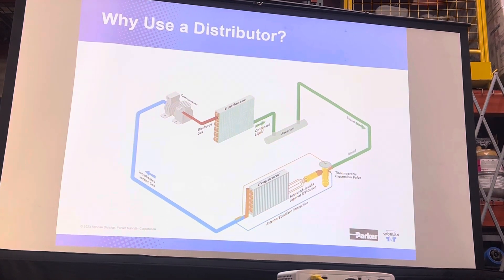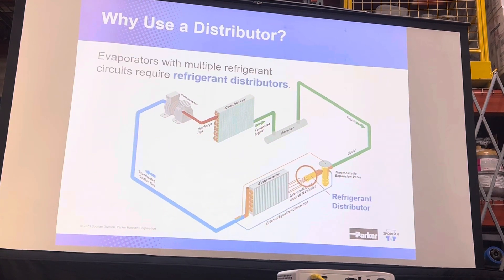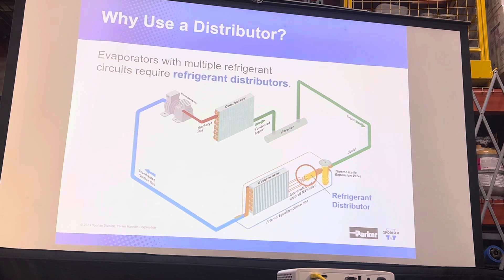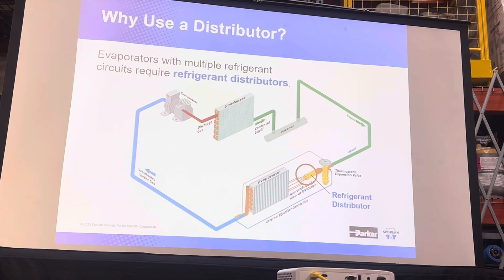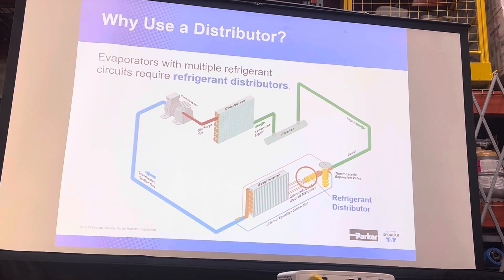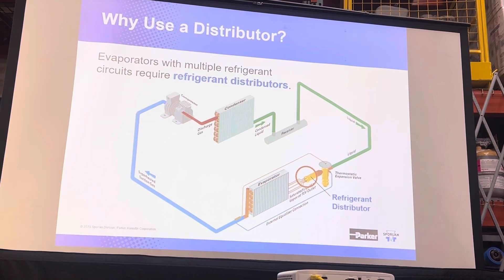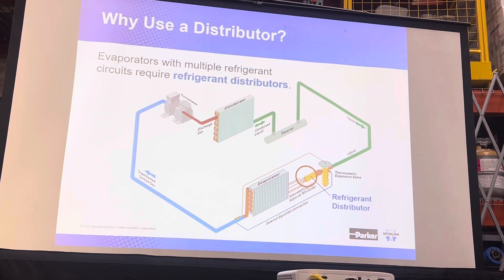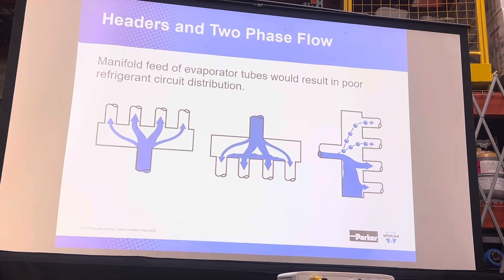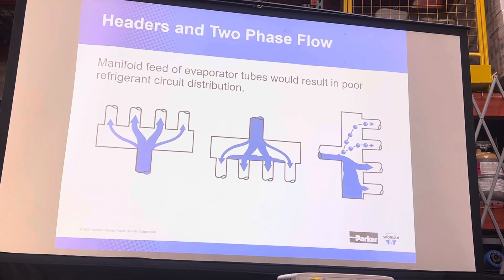Why is that important? Because as we leave the expansion device, we generally have saturated flow that is liquid and vapor — so you've got two-phase flow. Vapor wants to go one place, liquid wants to go another, and the distributor helps to mitigate the problems associated with that.